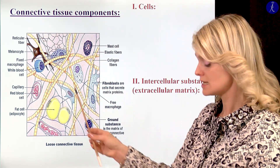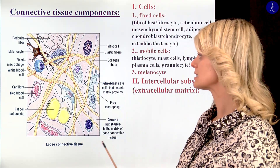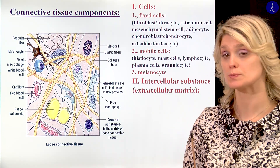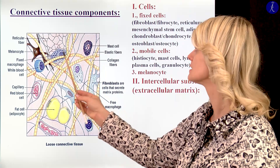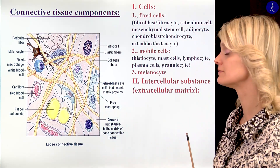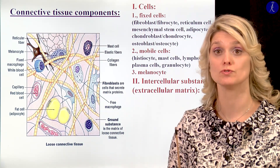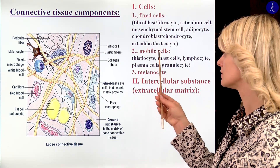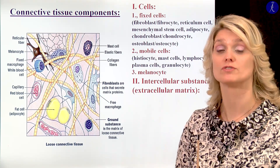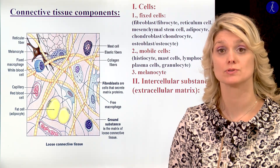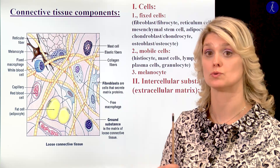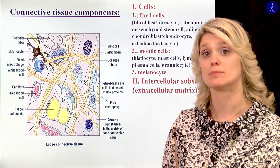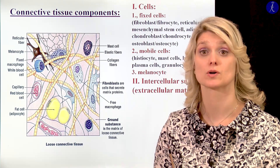We can talk about two main groups of cells in the connective tissue. The fixed cells, which will not move — they stay in position and won't change their location. And the other group is the mobile cells, which are able to migrate, going through the wall of the blood vessels and moving within the connective tissue.